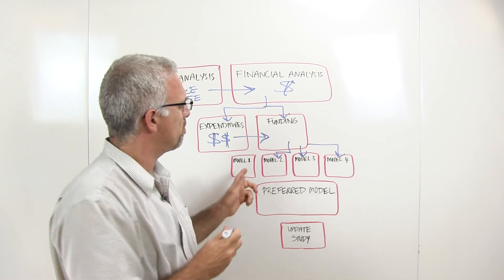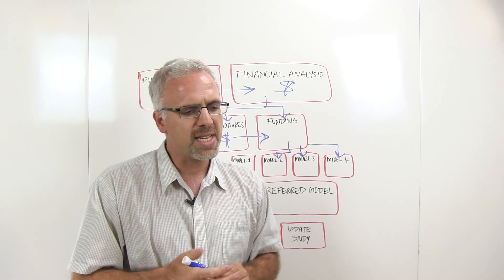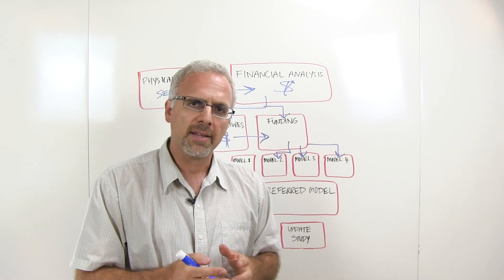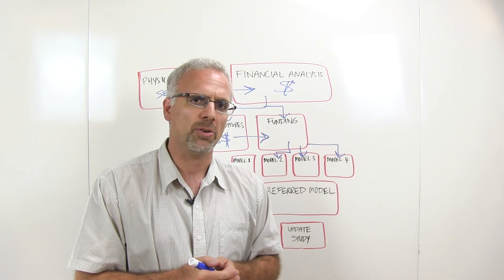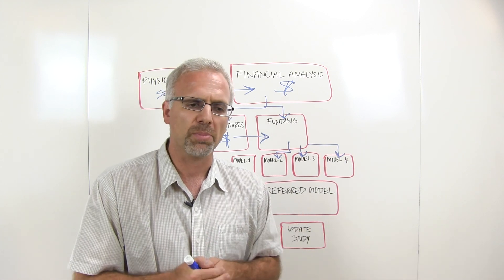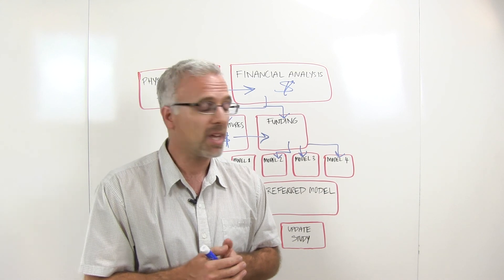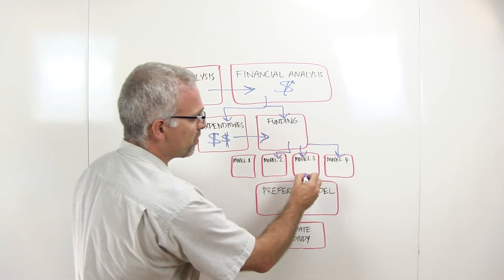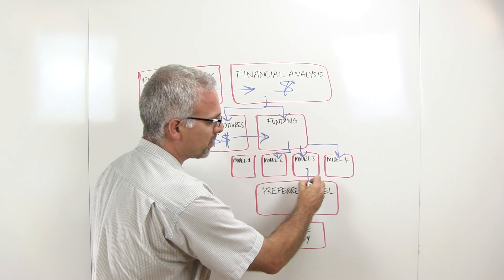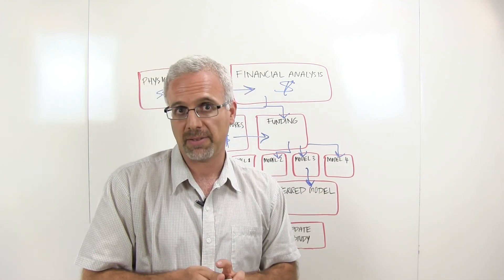The point here is to provide the owners with a sensitivity analysis to identify what path is comfortable for that owner group and what's considered reasonable. Every condominium corporation is different, and funding expectations and requirements are different from building to building. The owners will select one of these four models as their preferred model, which will then be implemented for the next fiscal year as the budget funding for that year.